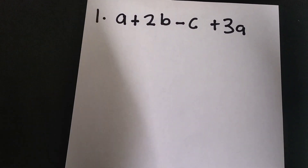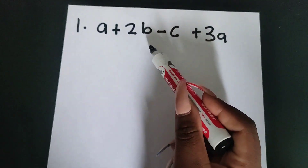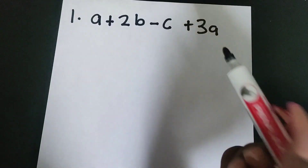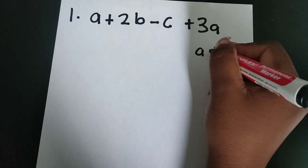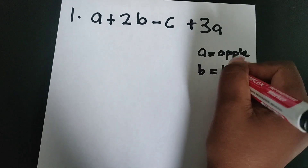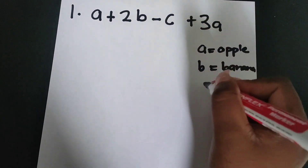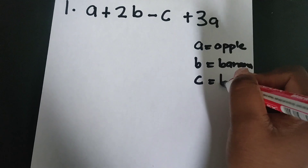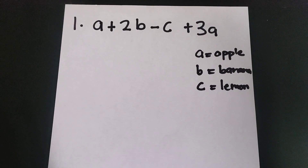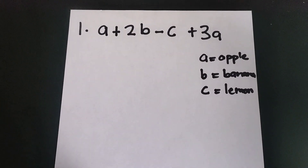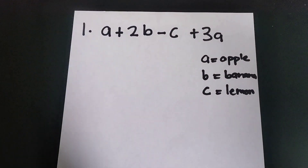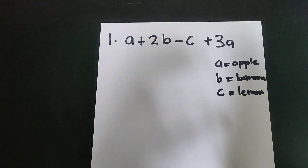That's how I remember them. So you have your a, your b, your c, and your other a. Consider your a's as your apple — a stands for apple. And then your b can be your banana, and then your c can be your lemon. So whenever you're adding or subtracting algebraic expressions, you first have to collect your apples together, collect your bananas together, and collect your lemons together.